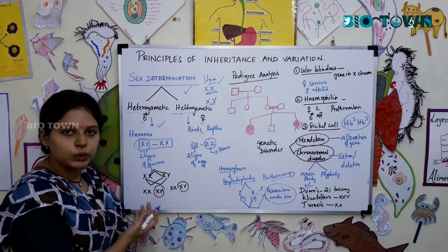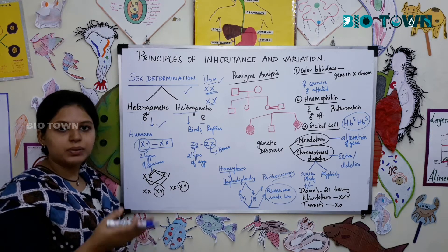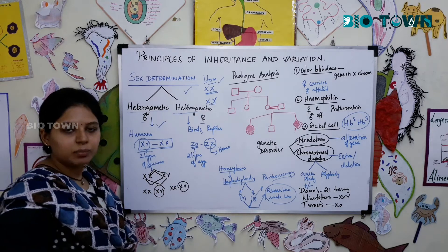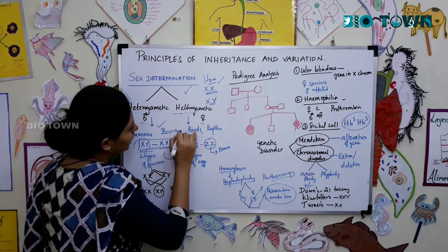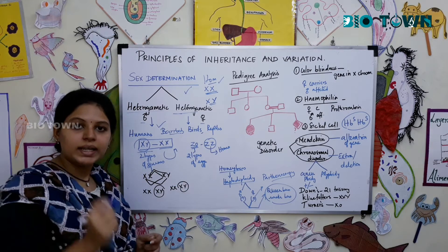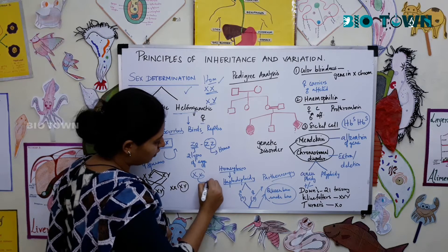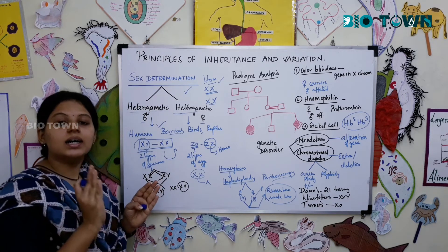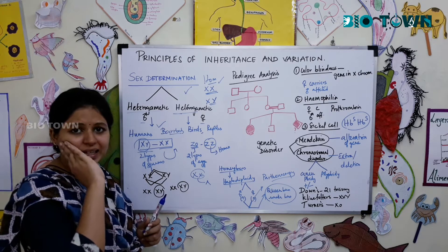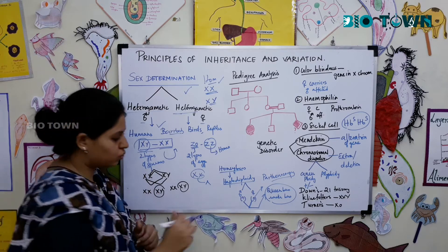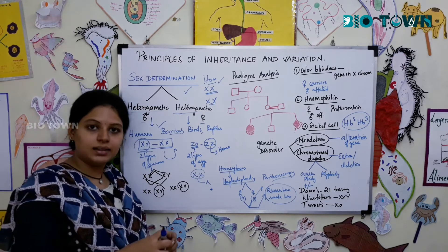In humans, males are heterogametic with XY chromosomes, and females are homogametic with XX chromosomes. An additional note: the Bar body is present only in females. It is a condensed chromosome. A female having two X chromosomes will have a single Bar body. It is stored in nervous tissue — for example, in the inner epithelial cheek cells. When you scrape and look under a microscope, there is a thick spherical body in the cell, which is the Bar body. You can stain and view it.